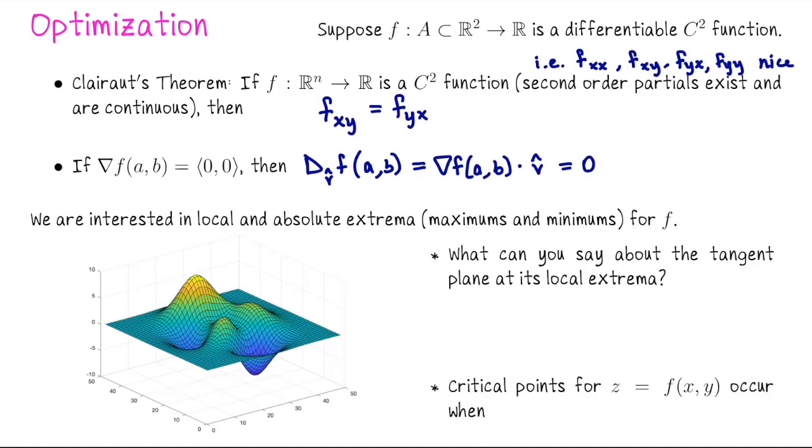In other words, if you're standing at a,b in the domain, and you look in any direction around you, you don't see that the function would increase or decrease. And that kind of behavior is what we're going to be interested in when we're looking for local and absolute extrema. So maxima and minima for these scalar valued functions.